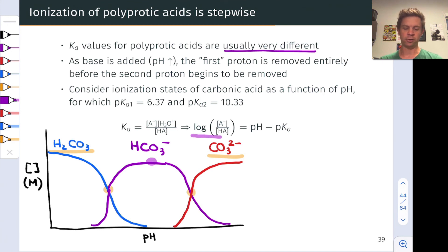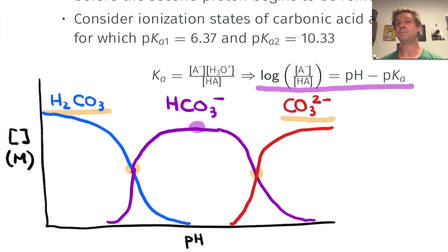The log of the ratio of a base to its conjugate acid is equal to the difference between the pH of the solution and the pKa of the acid. This is known as the Henderson-Hasselbalch equation. We'll dig into it in more detail later on.